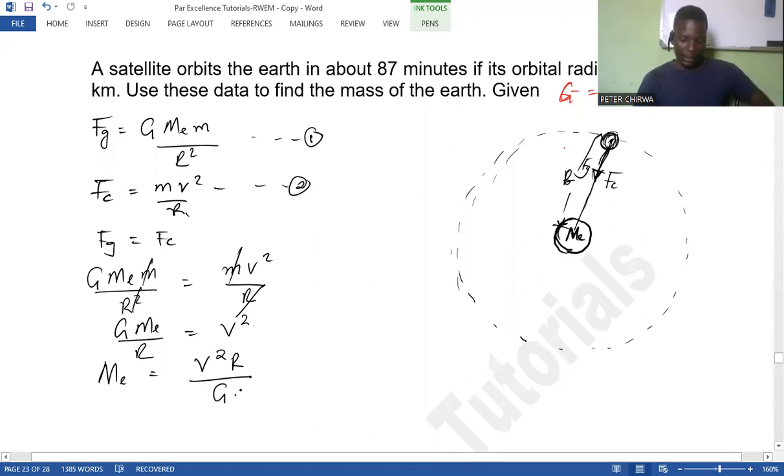So we equate these two equations here, whereby we are going to have G M_E M over R squared being equal to M V squared over R. So we can cancel R and M, and we can make M_E the subject of the formula. So the mass of the Earth is going to be V squared R over G.